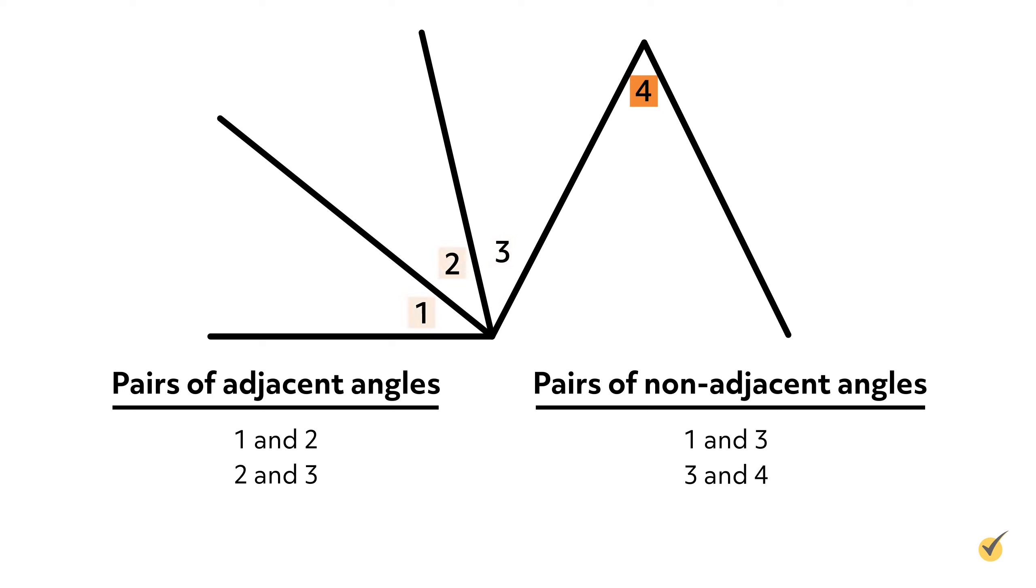Angle 4 is also not adjacent to angles 1 and 2 because it has neither a common vertex nor a common side between them.